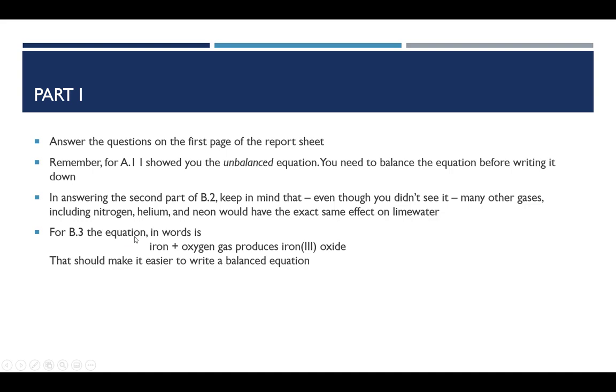For B3, I want to simplify this. The equation in words is the steel wool is iron plus oxygen gas. So that's your left side of your equation, and it forms iron three oxide as the product. My hope is that this will make it much easier to complete that equation. Be sure to balance it. I am not going to show you B4, which asks you to compare densities of some gases. So just draw a single line through the section on B4 and write not shown. Now I will continue on to the sections on carbon dioxide. If you need to pause to complete the report sheet, please feel free to do so.